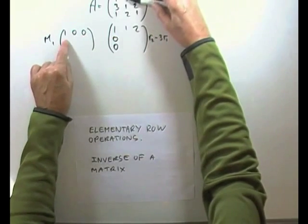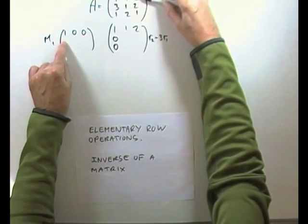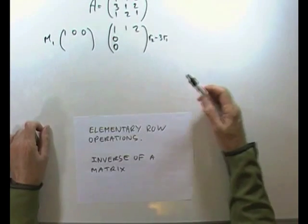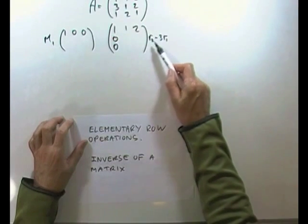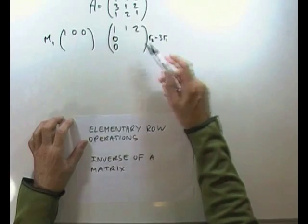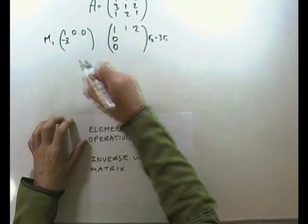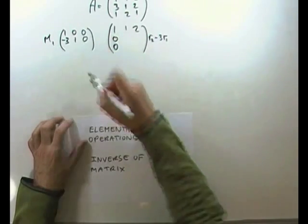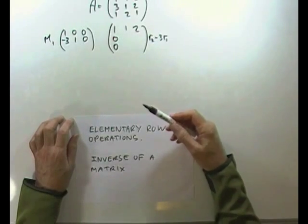Same for the next one — I'll have one of them, none of them, and none of them. One of them, none of them, none of them, thereby leaving it alone. If I want row 2 take away 3 lots of row 1, that says that I want negative 3 lots of row 1, one lot of row 2, and none of the third row. And I'll achieve the desired result.